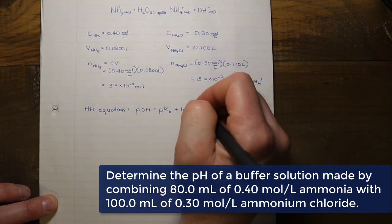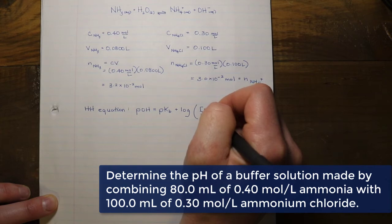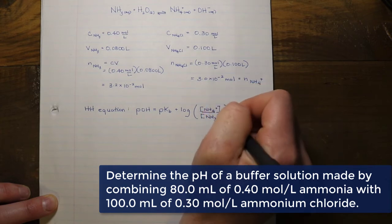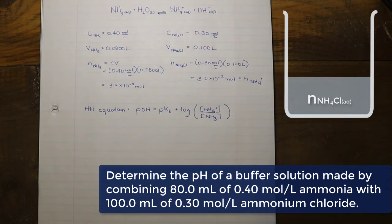Because we are solving for a basic buffer problem, we are going to first figure out the pOH. We are going to use the pKb, and then we are going to add it to the log of the concentration of the salt in the numerator divided by the concentration of the base in the denominator.